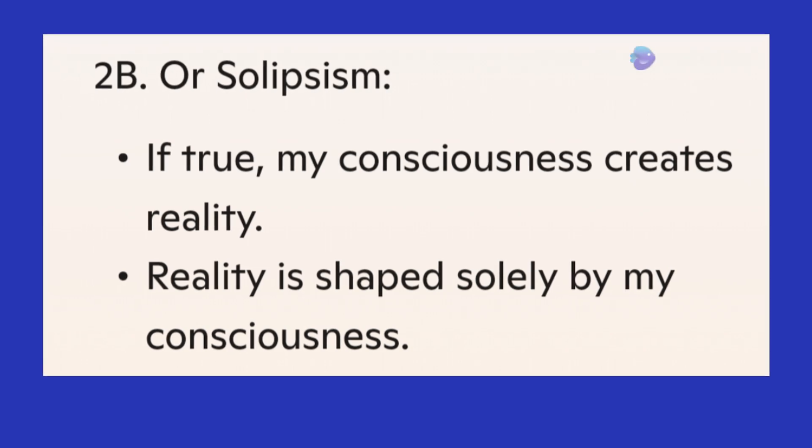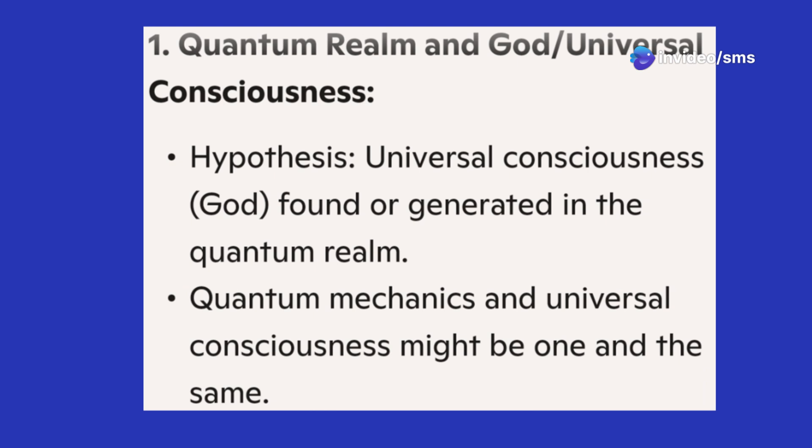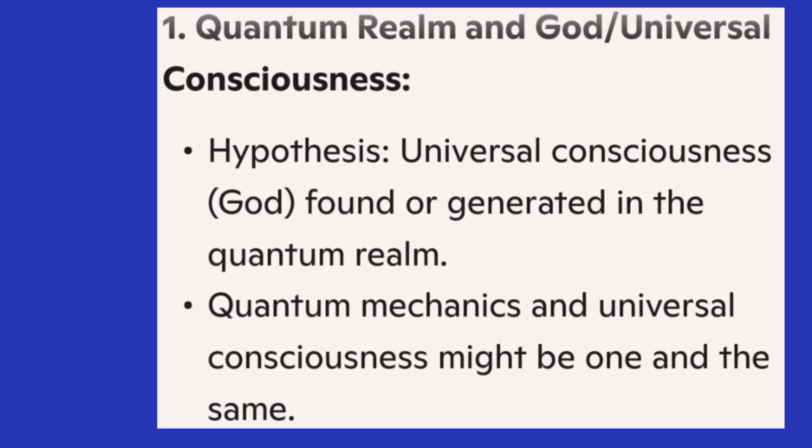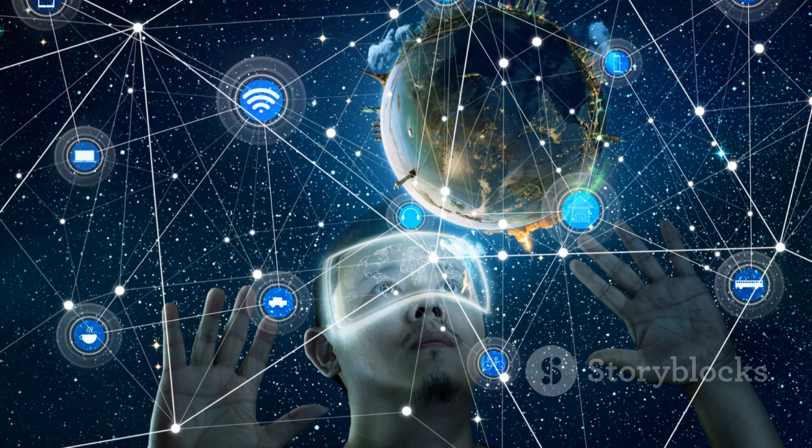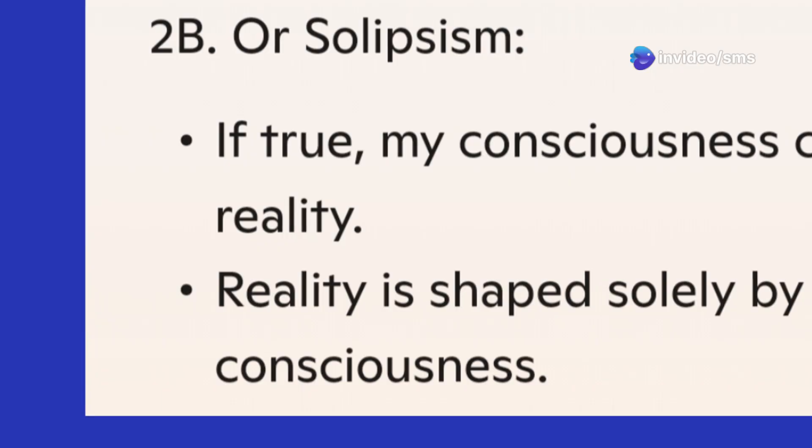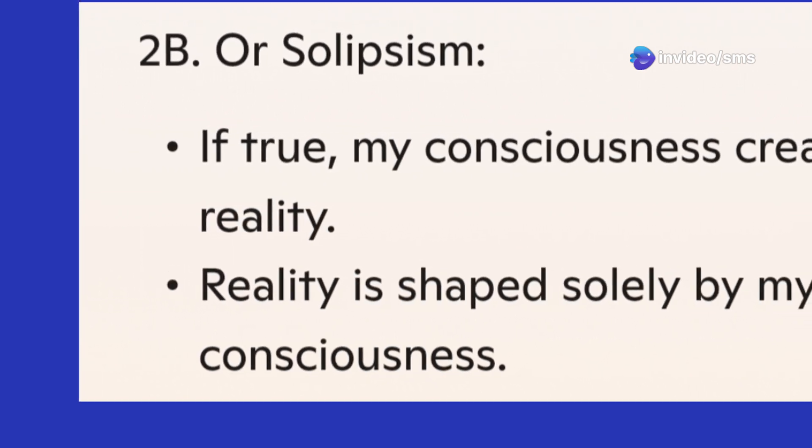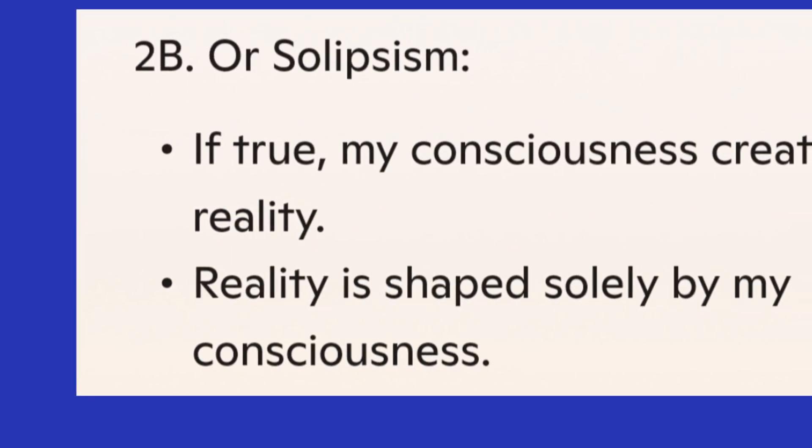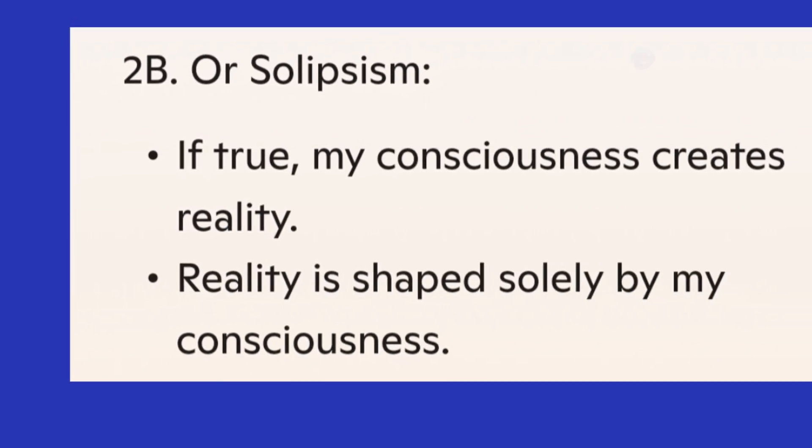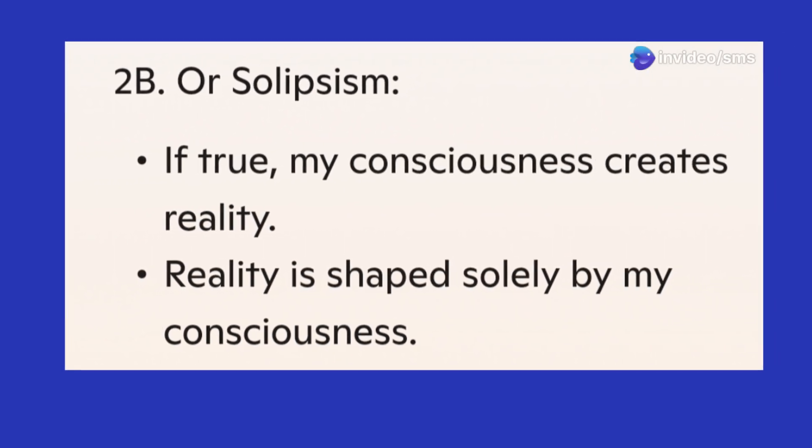Our hypothesis of universal consciousness suggests that consciousness is interconnected throughout the universe via quantum entanglement and other quantum mechanisms, implying a higher god-like or all-encompassing consciousness. Hypothesis 2b posits that if solipsism is true, only one's own consciousness is certain to exist. This leads to the idea that our reality could be a simulation created by our own consciousness.